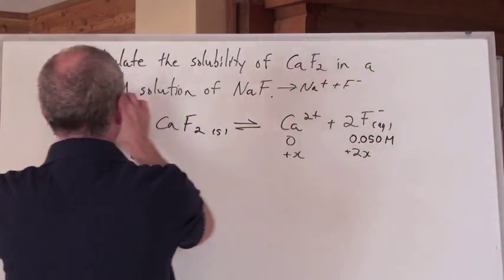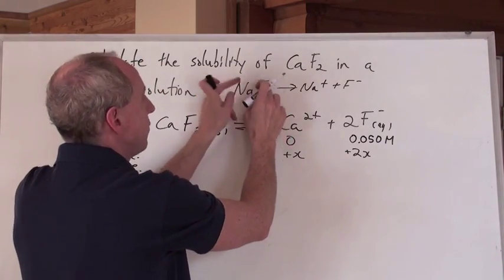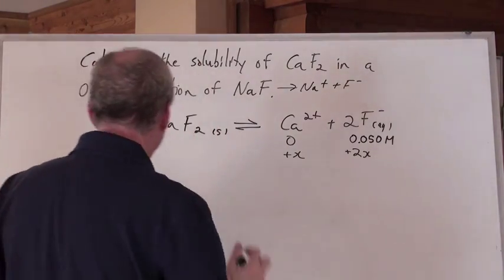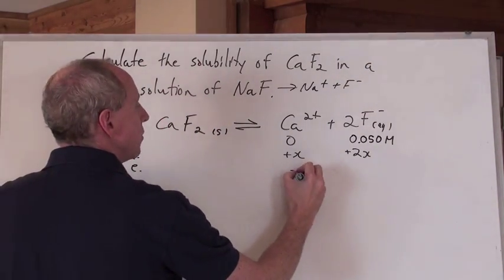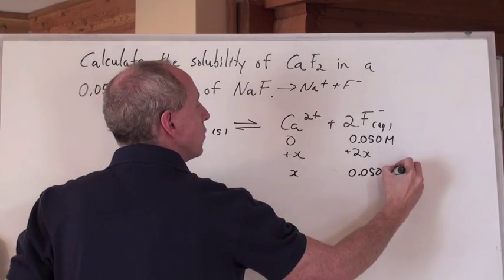So, you just go back here, you look at this over here, you say, okay, that concentration actually describes not only the Na positive, but the F negative. Great, there it is in solution. Good. Now, so that means the change is going to be, this is going to be X, and this is going to be 0.050 plus 2X.